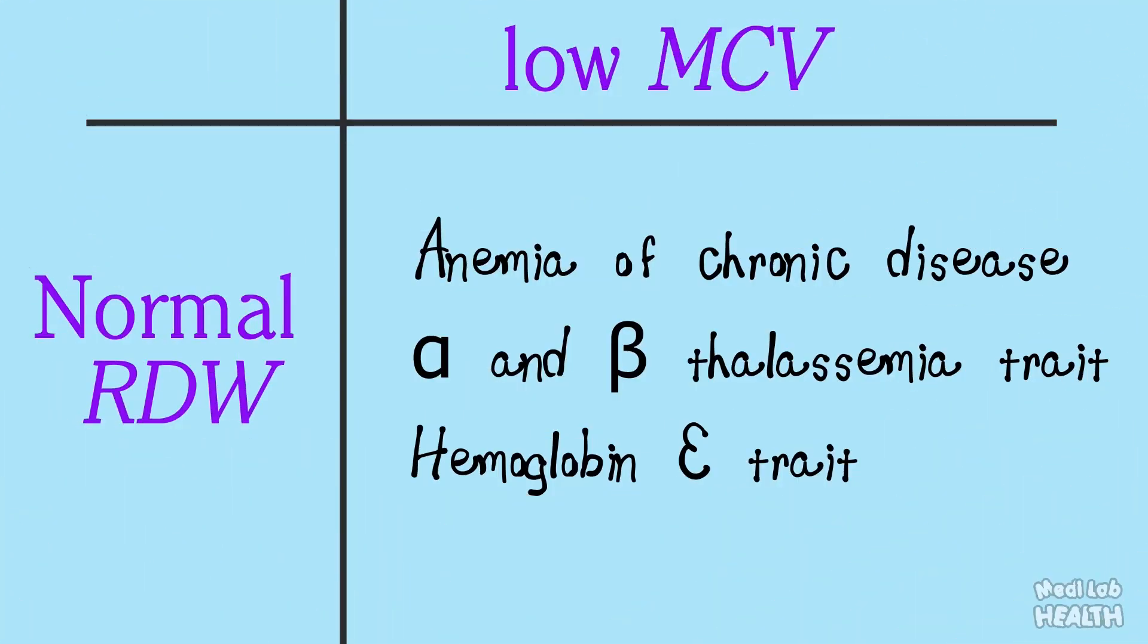Let's look at these cases of anemia. In anemia of chronic disease, alpha or beta thalassemia trait, and hemoglobin E trait, the MCV is less than 80 femtoliters or it's low, and the RDW value is normal.